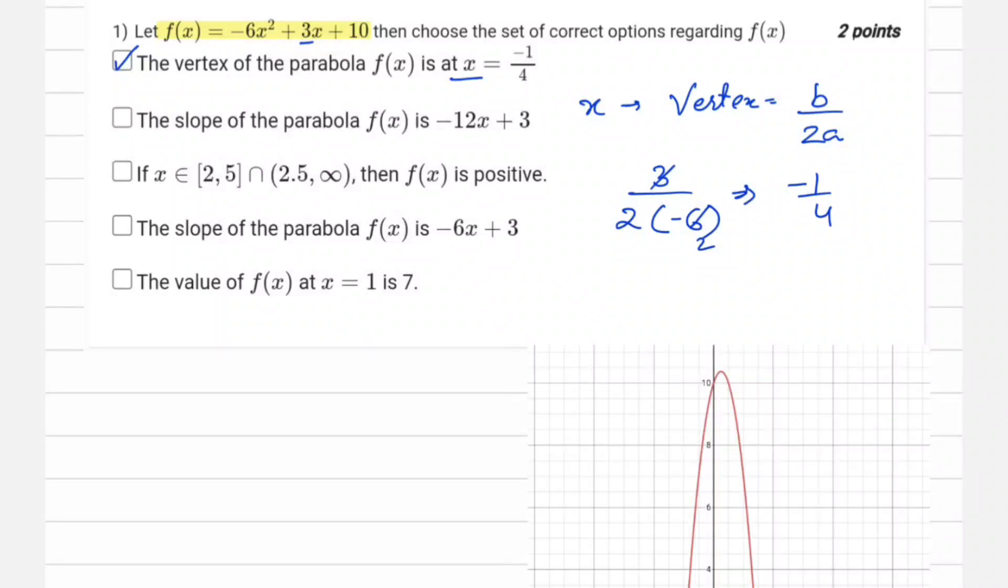On differentiating, let's first write the function: minus 6x² plus 3x plus 10. On differentiating this function, we get minus 12x plus 3, which is exactly what is given in the second option.